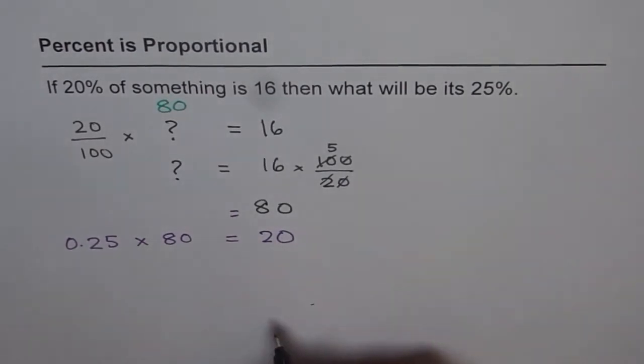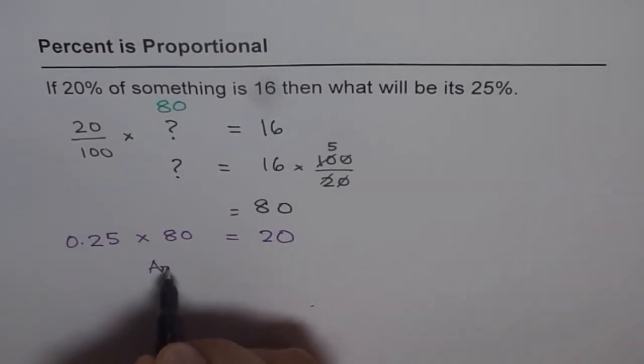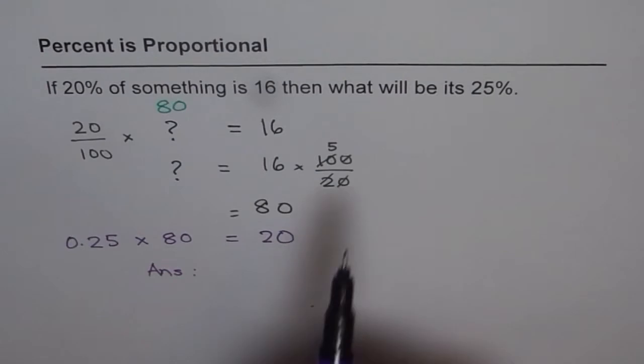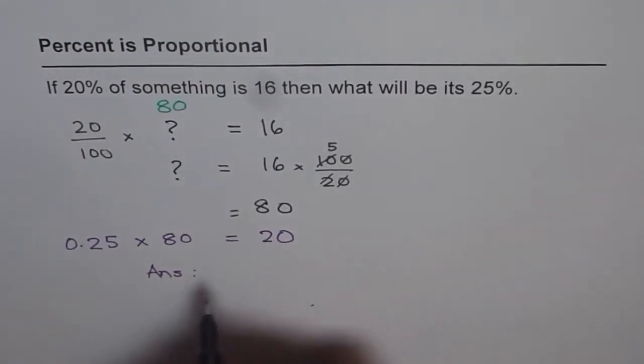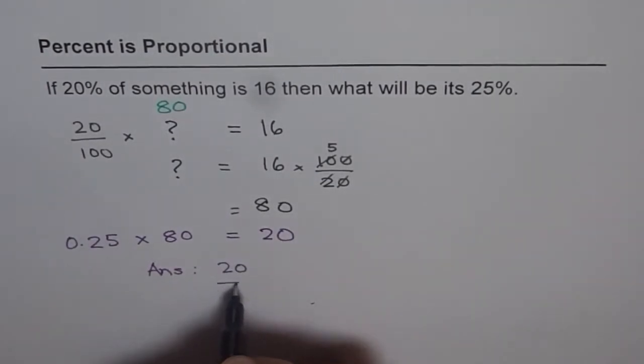You can use calculator to find the answer. And so, our answer is, then 25% of that number is 20. So, that is the answer.